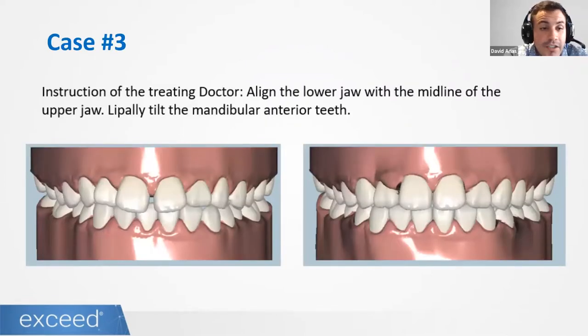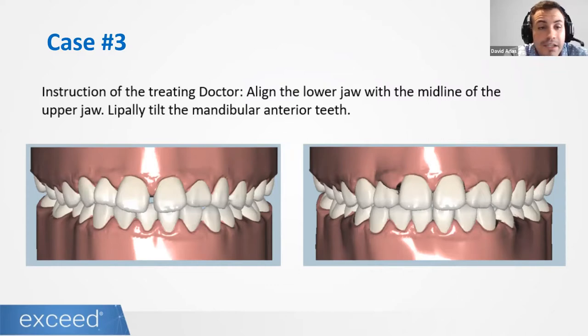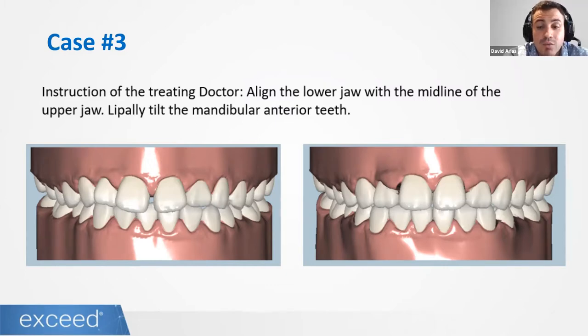Just to finish: another example of a vague instruction was 'align the lower jaw with the midline of the upper jaw' and 'lipally tilt the mandibular anterior teeth.' We don't understand this. It is important to be specific.